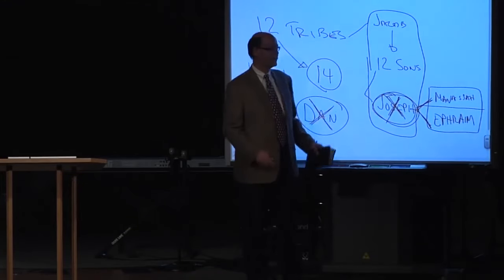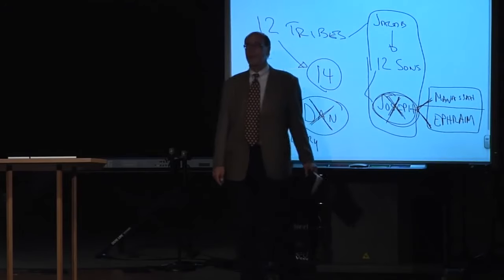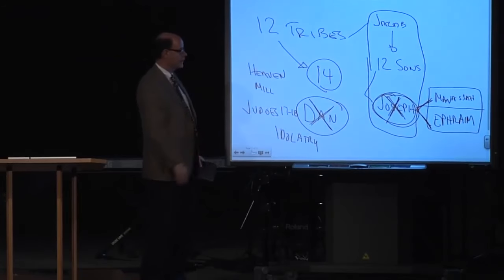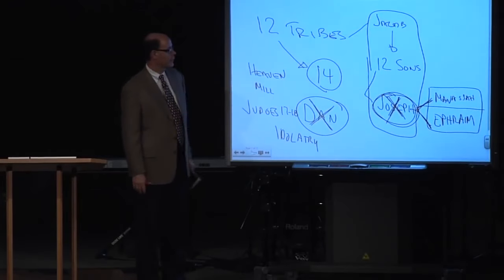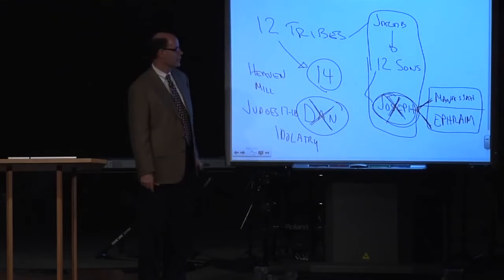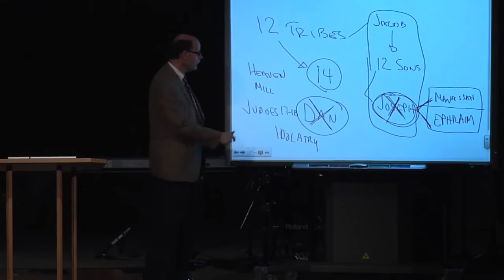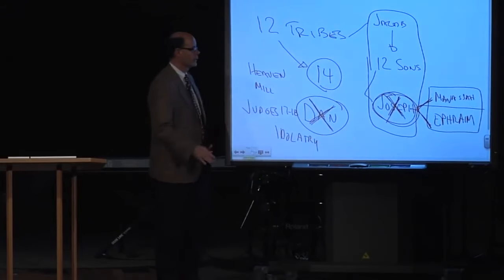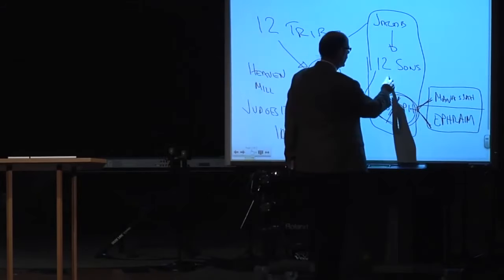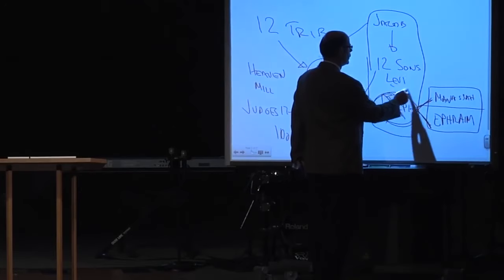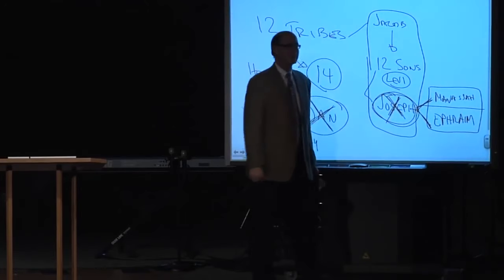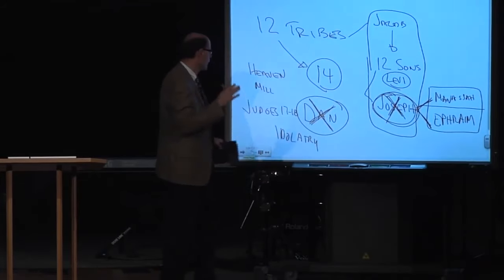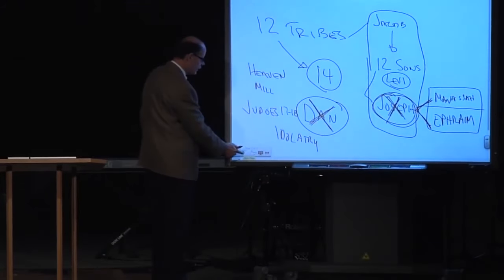But when we get to the actual list, Dan is in there when we get to the foundations of heaven. Dan is in there, but when we get to other lists, the national allotments, Dan is not in it. Manasseh and Ephraim are, and Joseph's not in it. But Manasseh and Ephraim are, and the 144,000 are like this. Now also one other thing, Levi never got a tribal allotment because the Levites were scattered all over the place. They got these cities of refuge. But that's why, and it's a fascinating study.